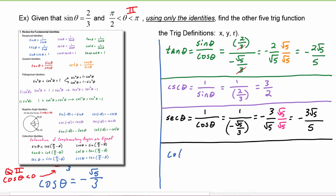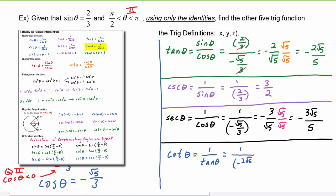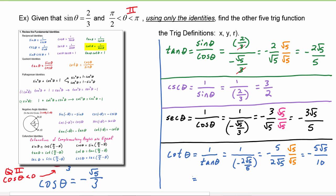Finally, cotangent of theta — you have two choices: cosine theta over sine theta, or one over tangent of theta. Using one over tangent of theta: one divided by negative two radical five over five gives negative five over two radical five. Rationalizing by multiplying by radical five over radical five, we get negative five radical five over ten, which reduces to negative radical five over two.